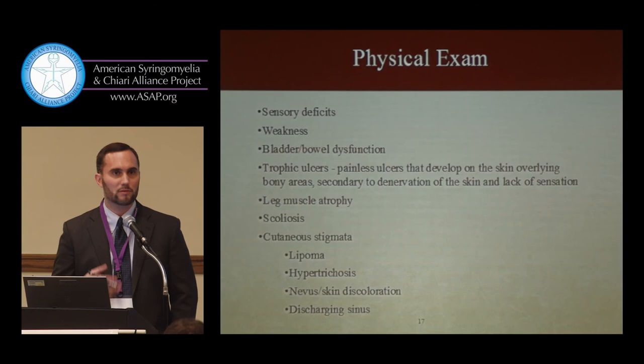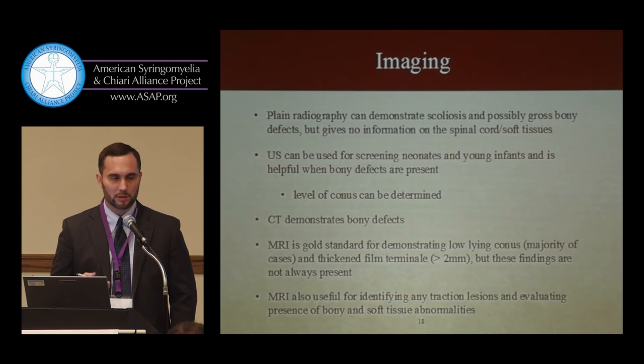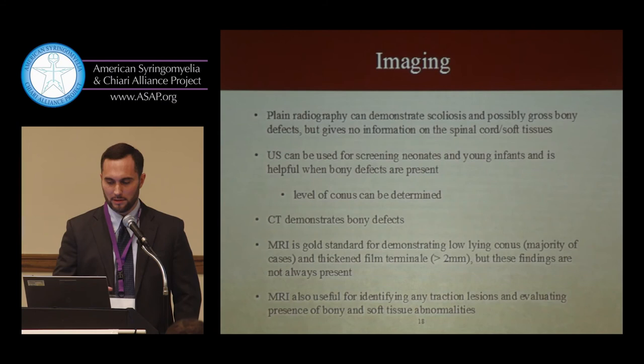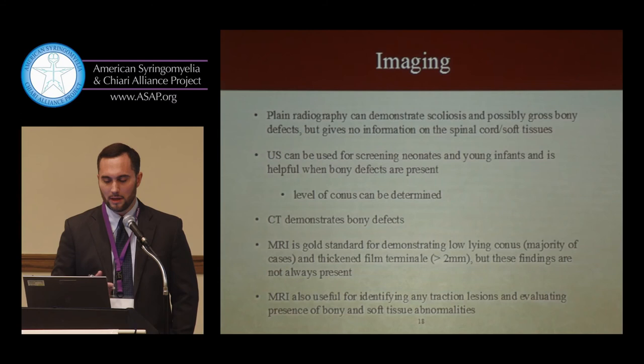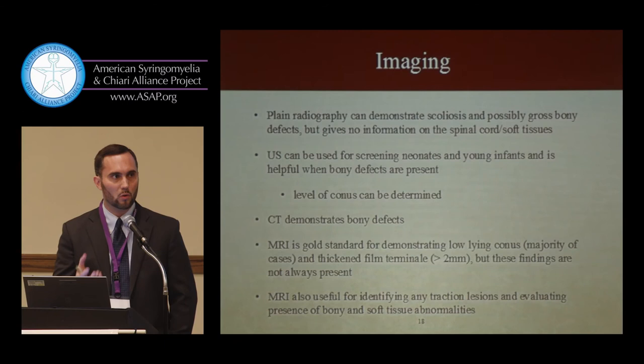For imaging, we use a whole host of modalities. Plain x-rays are only really good for seeing scoliosis and gross bony defects. Ultrasound can be used in young kids and neonates for screening. CT scan is used to look at bony defects. MRI is the gold standard for really looking at all of this — it will show you a low-lying conus, a thickened filum, and any lesion that may be tethering the cord to the spinal column.